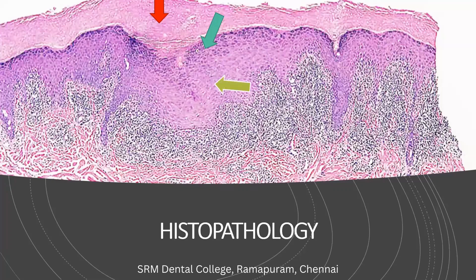The next finding is acanthosis of the spinous cell layer - the stratum spinosum exhibits acanthosis, meaning an increase in the spinous cell layer. Along with acanthosis, the spinous cell layer also shows intracellular edema formation. Because the cells have imbibed water, they will appear pale eosinophilic in color.